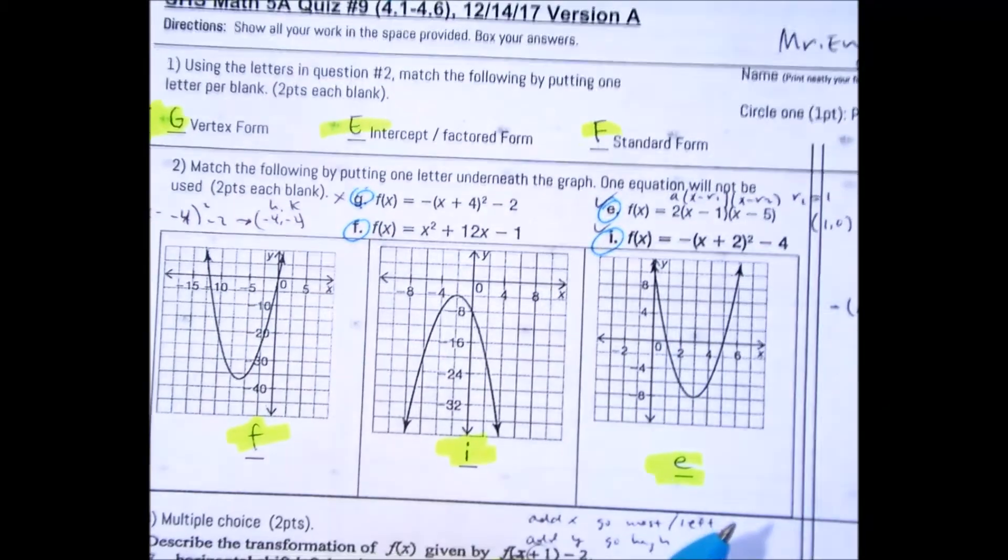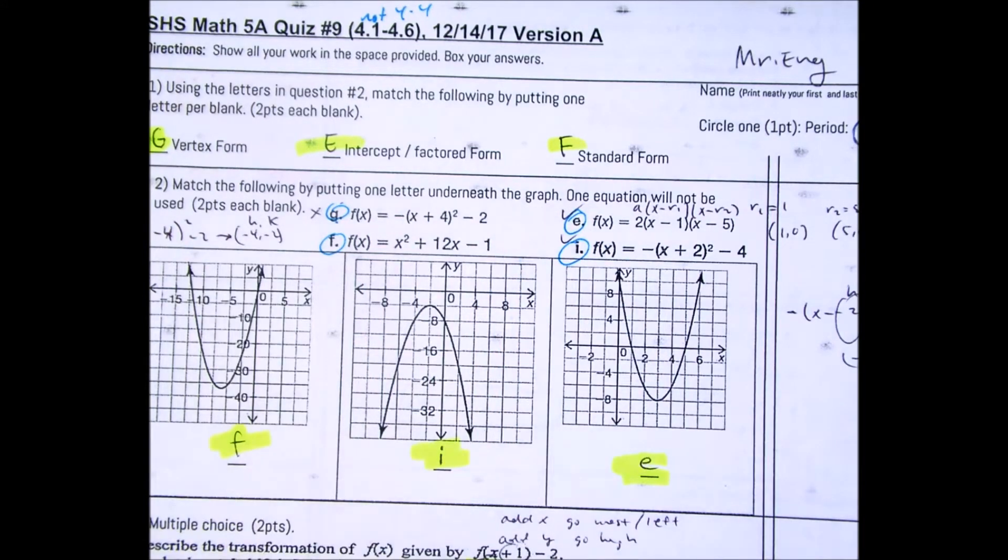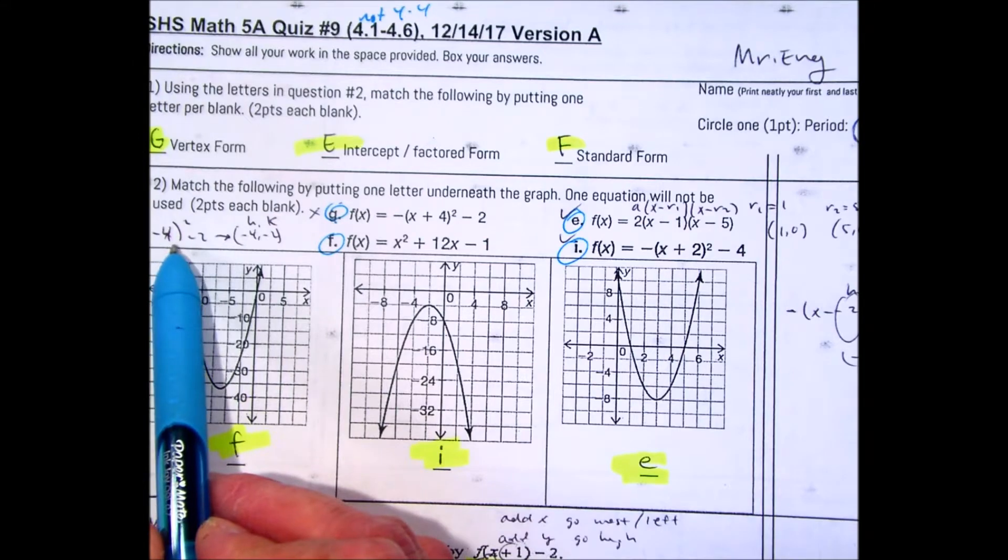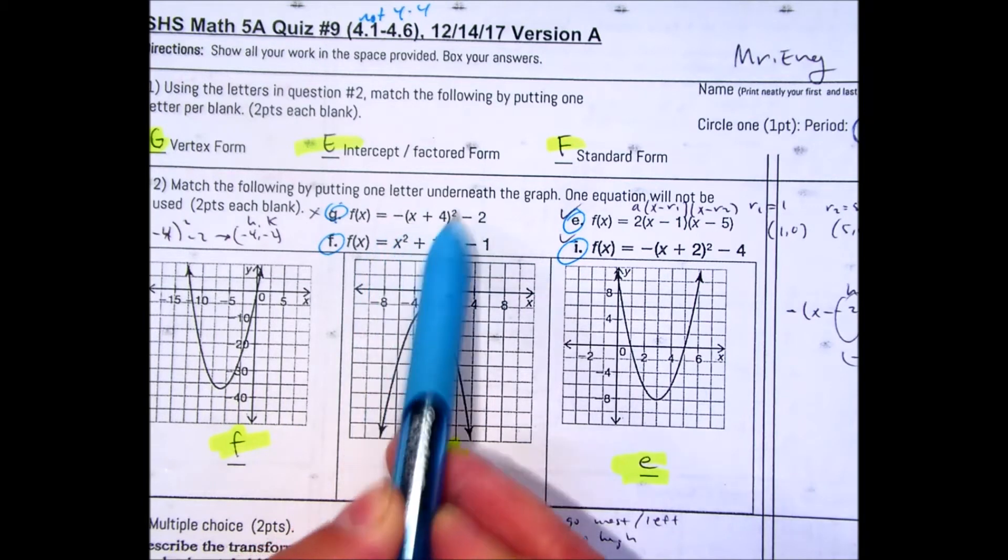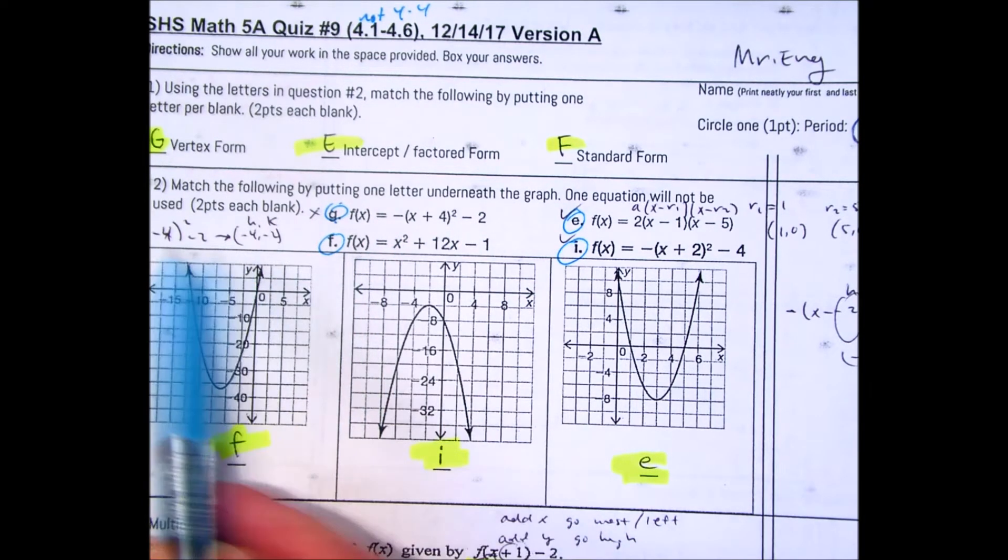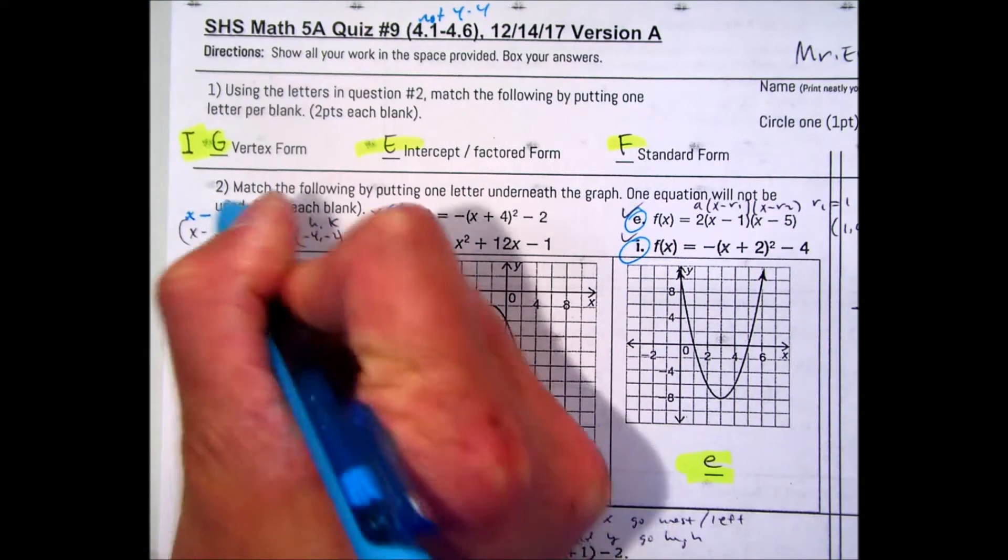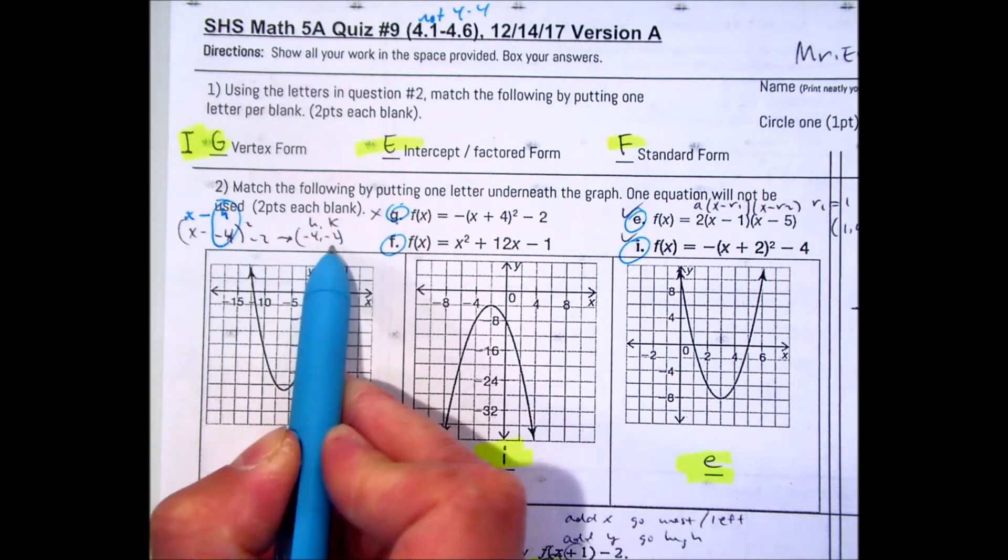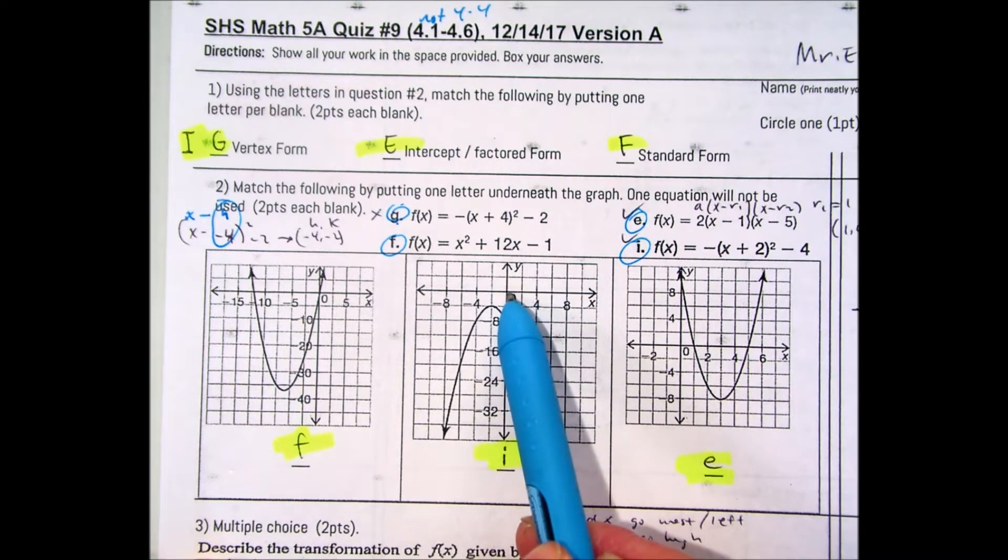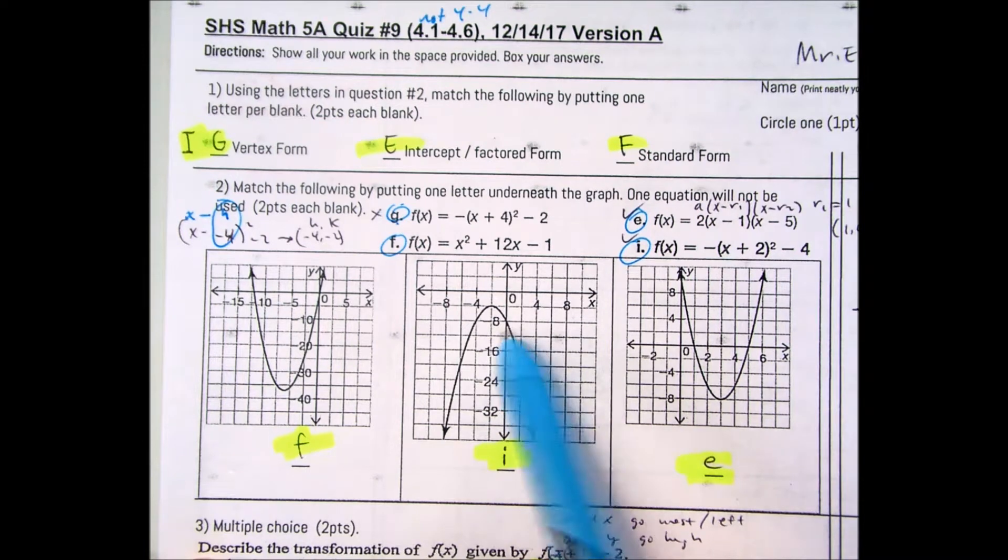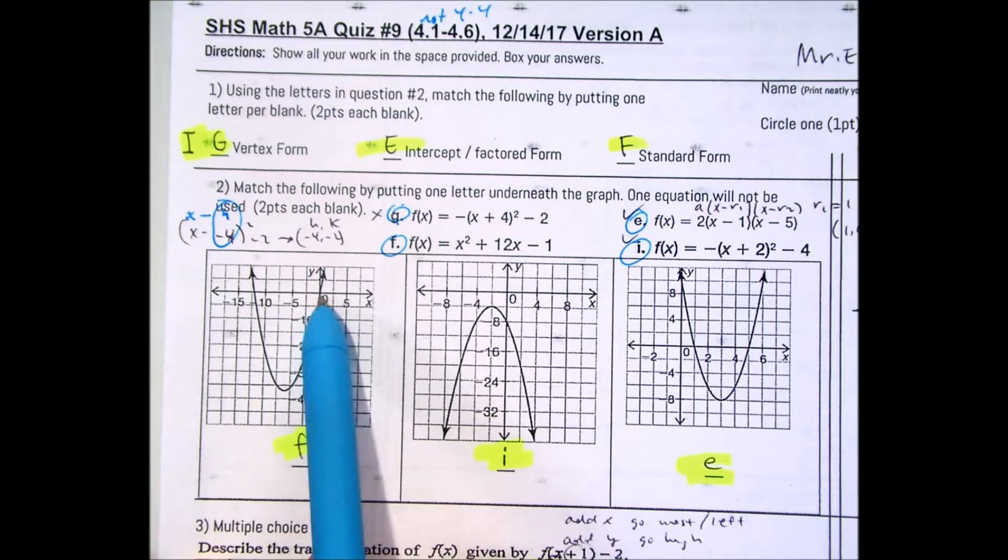Question number two, match the following by putting one letter underneath the graph. One equation will not be used. The hardest one, because there's two vertex forms. I have negative x plus 4 squared minus 2. Any time you see the plus sign, just write it with two negatives.